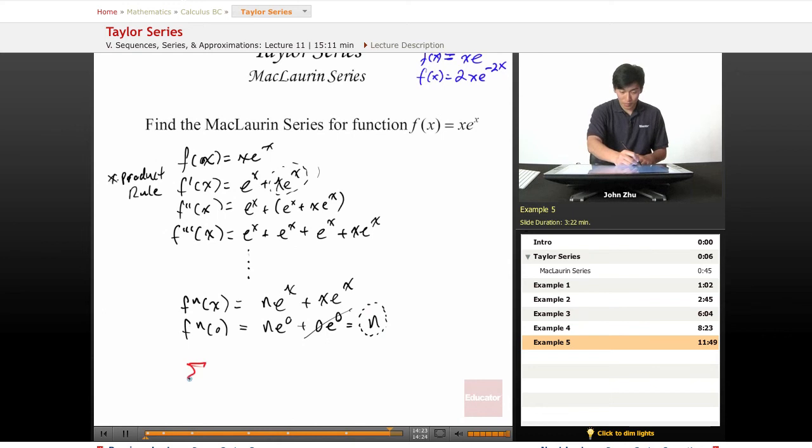So n equals 0 to the infinity. We get x to the n over n minus 1 factorial.